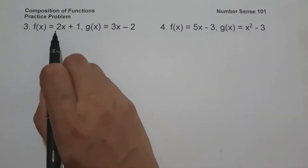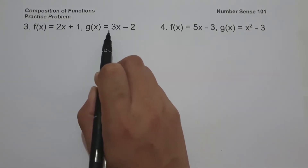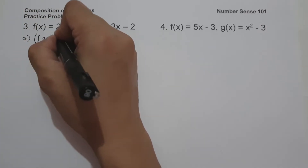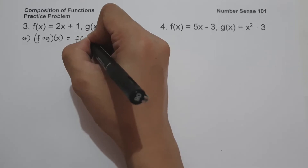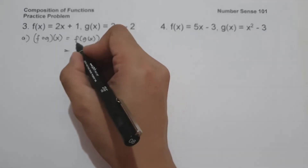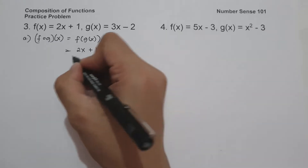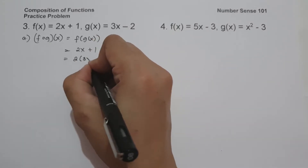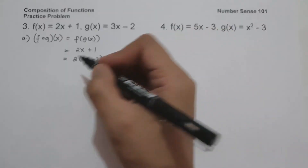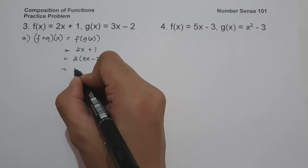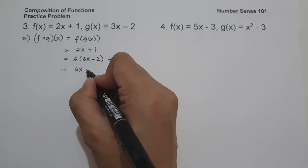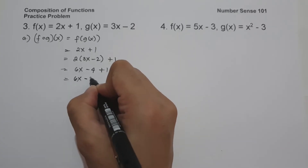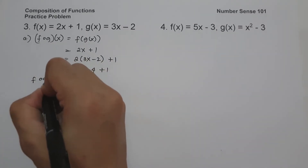Number 3: f of x equals 2x plus 1, and g of x equals 3x minus 2. Let us have f circle of g of x, and this will be f of g of x. f of x is 2x plus 1, and the value of x is g of x, which is 3x minus 2. So let us have 2 times 3x minus 2 plus 1. That is 6x minus 4 plus 1, giving us 6x minus 3. And this is f circle of g of x.